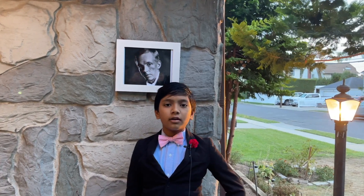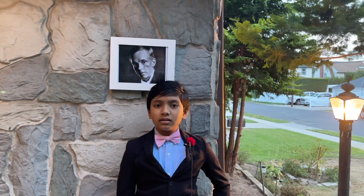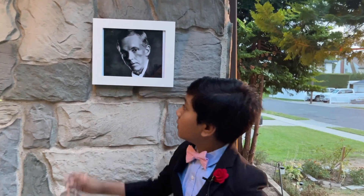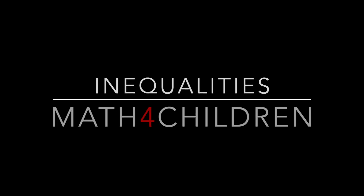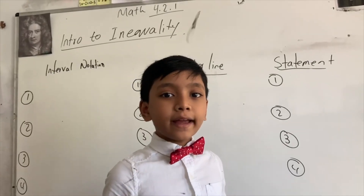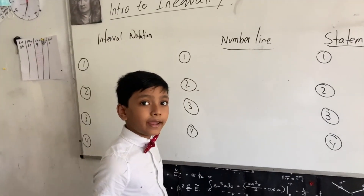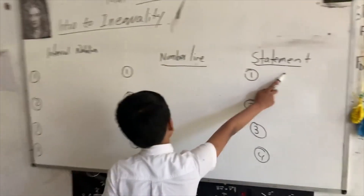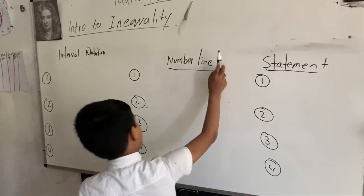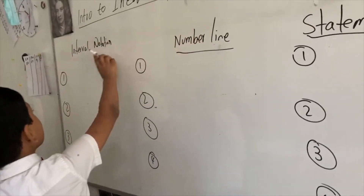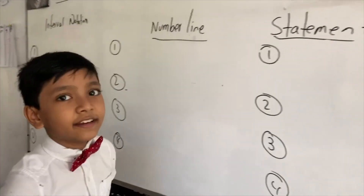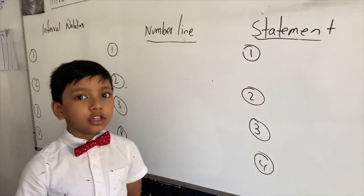The first book on inequality was partially read by G.H. Hardy himself, who was a friend of Ramanujan, in 1941. Today, we're going to be looking at how to interpret an inequality statement in three different ways. First, we'll write a statement, then we'll interpret it using a number line, and finally the interval notation, which is the trickiest of all.